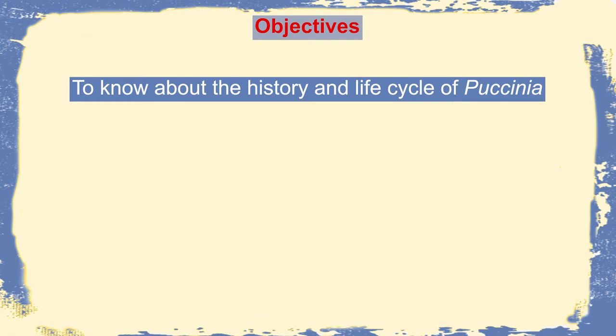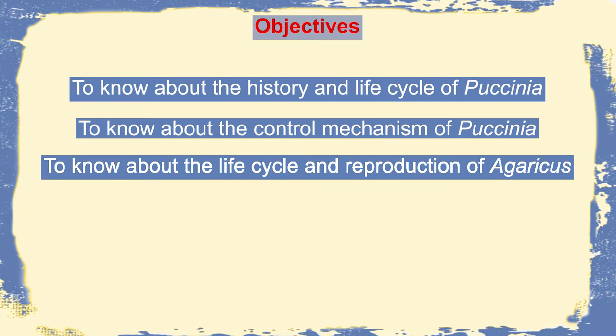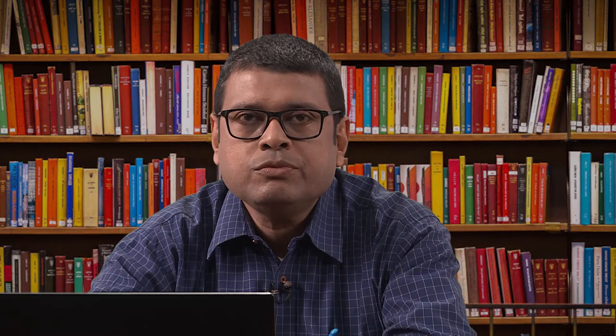The major objectives of this particular lecture are to know about the history and life cycle of Puccinia, which is a common cause of rust disease in wheat and other crop plants, to know about the control mechanism of Puccinia, and also to know about the life cycle and reproduction of Agaricus, which is a common edible mushroom cultivated and consumed all over the world, and also to know about the cultivation technique of this mushroom, along with its nutritional importance.